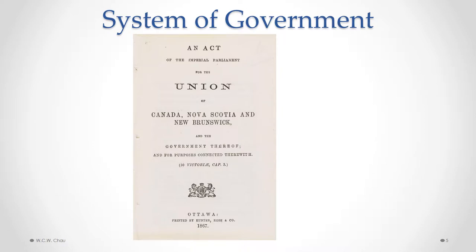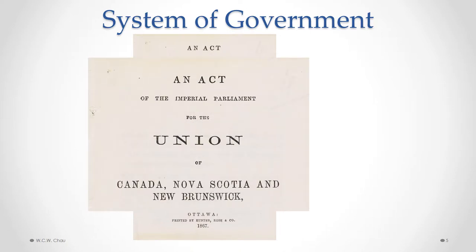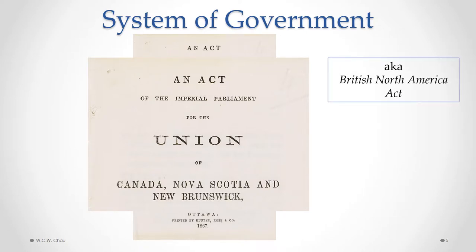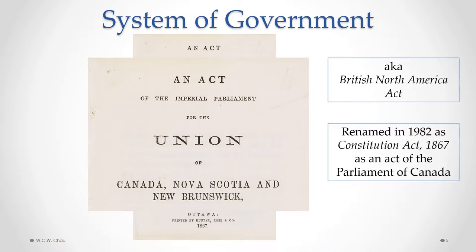Our system of government in Canada is created by our original constitution, which was created back in 1867. It was an act of the imperial parliament — that is, the British parliament. So our original constitution was a British law. It was an act for the Union of Canada, New Brunswick, and Nova Scotia. Canada here refers to both Ontario, which is upper Canada, and Quebec, which was lower Canada. So originally, Canada was made up of four provinces. This act of the British parliament was also known as the British North America Act, or BNA Act. It was renamed in 1982 to be the Constitution Act 1867. In 1982, our constitution became Canadian in the sense that it became a Canadian law — it was no longer British, but became Canadian.